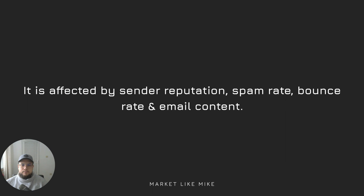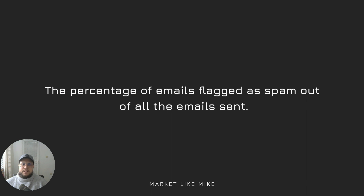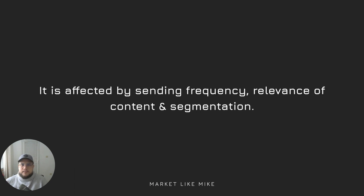We'll discuss how to improve your reputation and avoid landing in spam in future videos. Finally, I want to talk about spam rate. This is found by taking the number of emails flagged as spam and dividing it by the total number of emails sent, giving us the spam rate in percentages. For example, if 3 people flagged your email as spam out of 100, that is a 3% spam rate. This is affected by your sending frequency, the relevance of your content, and segmentation. This rate can tell you if you're sending too many emails or sending to the wrong people.